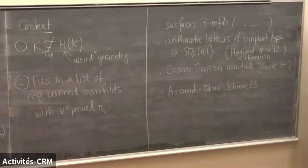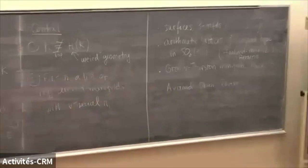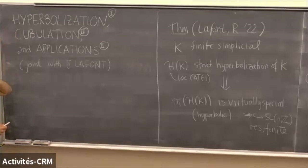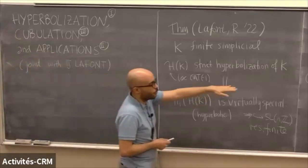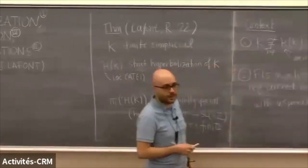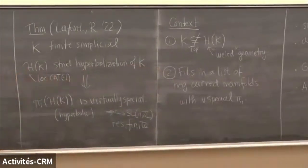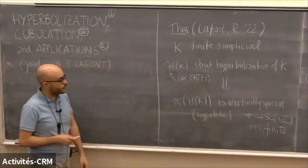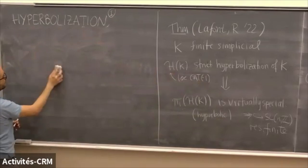That's the context for this result. My outline for today: I'm going to start by talking about hyperbolization procedures — I won't assume people know what that is, so I'll give definitions and examples. Then I'll tell you some classical applications of these procedures — what kind of weirdness you can realize with hyperbolization. And in the final part I'll talk about how we get the CAT(0) cube complex used to get virtual specialness.